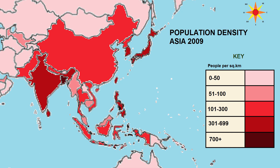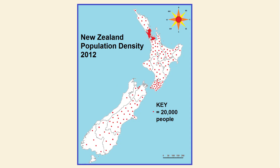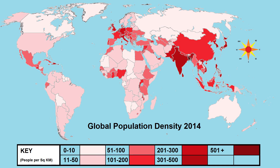Patterns of population density can be displayed on a map, such as a choropleth map or a dot distribution map. For example, this choropleth map shows the population density on a global scale.